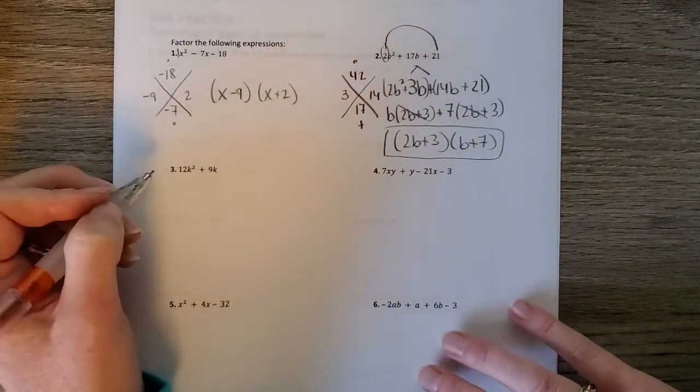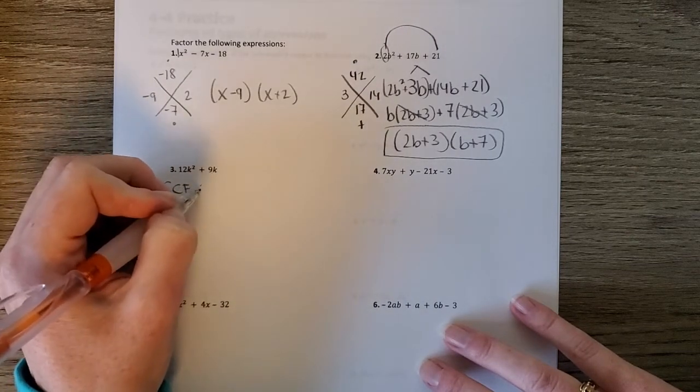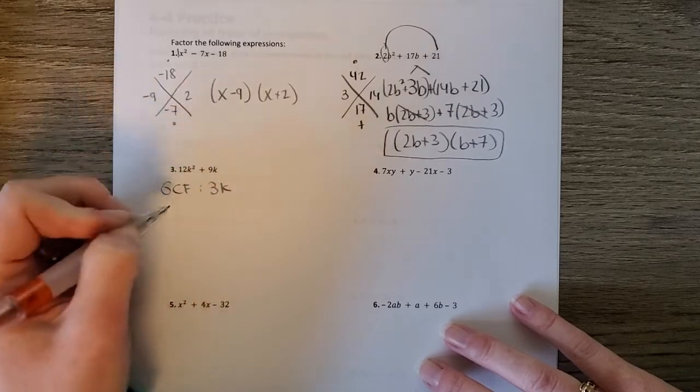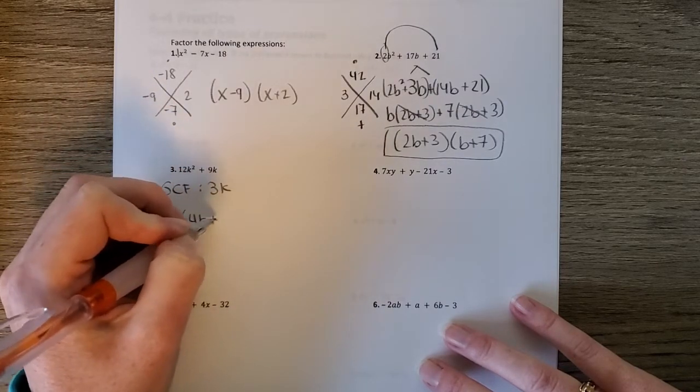Number 3 only has two terms, which means the only thing we can do is GCF. The GCF is 3k. So we have 3k times 4k plus 3.